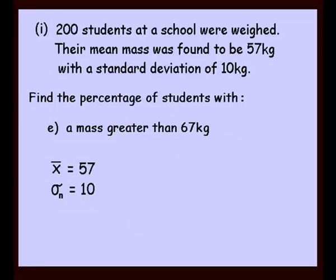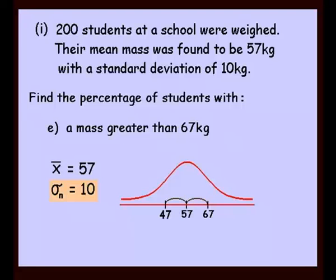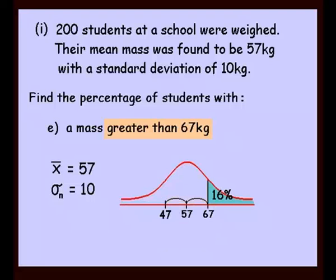Question E: find the percentage of students with a mass greater than 67 kilos. To get to 67, the standard deviation of 10 indicates a jump of one to the right. One standard deviation either way accounts for 68%, leaving 32% on the outside. That 32% is split evenly — 16% on each side. So the percentage of students with a weight greater than 67 kilos is 16%.